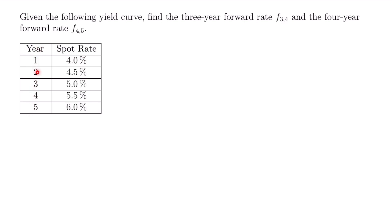We want to calculate two different forward rates given this table, which is referred to as a yield curve, where we have different spot rates that correspond to different lengths of an investment. We could have a one-year, two-year, three-year, four-year, or five-year investment, each with different spot rates. In order to find these forward rates using the spot rates in this table, you need to know the formula for calculating an n minus one-year forward rate — a forward rate that takes place between two years that are one year apart. This forward rate takes place between year three and year four, and this one between year four and year five. If those two numbers are not one year apart, you'll need a different formula.